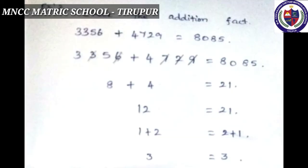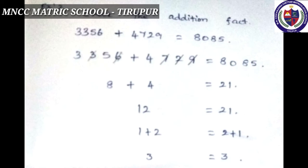Example 2: check the addition fact. 3,356 + 4,729 = 8,085. Cast out 9s from each number: in 3,356, strike out 3 and 6 (since 3 + 6 = 9). In 4,729, strike out 7 and 2 (since 7 + 2 = 9), and also strike out 9. In 8,085: 8 + 0 + 8 + 5 = 21, and 2 + 1 = 3. The remainders from the addends also give 3, so both sides equal 3, confirming the addition is correct.